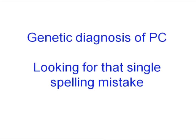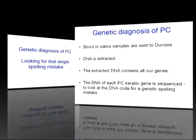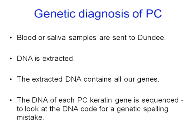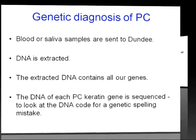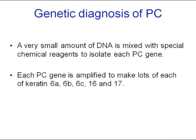Moving now on to the genetic diagnosis of PC, and how we look for these single spelling mistakes within one of the keratin genes. Most of you have probably sent blood or saliva samples for genetic testing. These are sent to the lab in Dundee, where we extract the DNA. The DNA contains all of our genes, and then we're specifically interested in looking at the keratin 6A, 6B, 6C, 16, or 17 genes. We do this by DNA sequencing. Once we've extracted the DNA, we take a very small amount and amplify it up to make lots of the particular genes that we're interested in, so we can examine them in more detail.